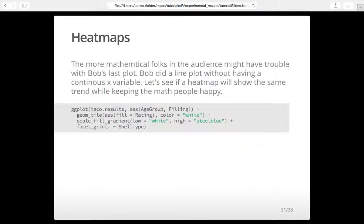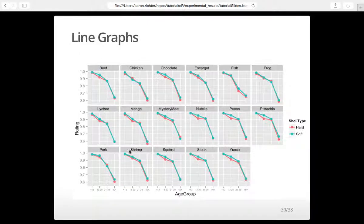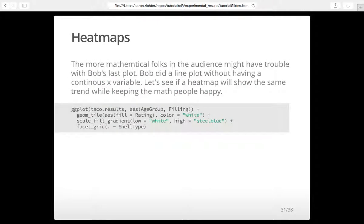Something interesting to note: age group is a categorical variable, so technically you shouldn't be doing a line graph since lines are for continuous or time-based data. We don't want people to say we're doing our math wrong. But what's nice about ggplot is that there are lots of different options — so now we're going to do a heat map.